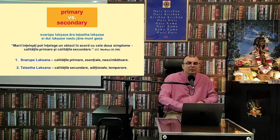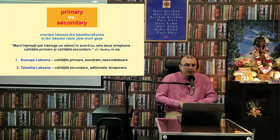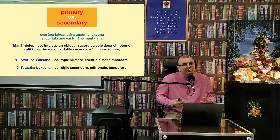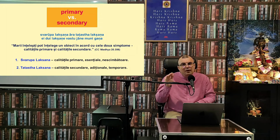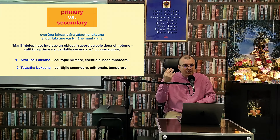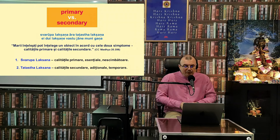Să luăm un kirtan, cum am cântat acum. Svarupa Lakshana, calitatea primară a unui kirtan, este — cum spun Vedele — Abhinna Tvat: întotdeauna când se incantează numele sacru Hare, Krishna sau Rama, aceste nume sunt non-diferite de Adevărul Absolut. În momentul în care conștiința noastră este expusă la această vibrație, conștiința noastră se spiritualizează, karma se modifică și se îmbunătățește.